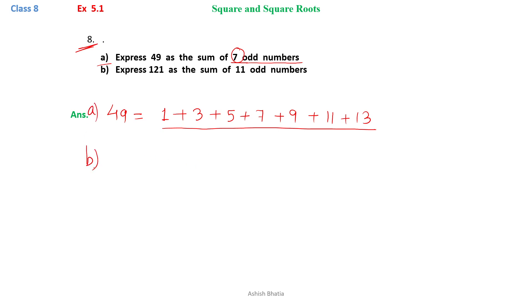Then part B, we have to represent 121 as sum of 11 odd numbers. We will represent 121 as 1 plus 3 plus 5 plus 7 plus 9 plus 11 plus 13 plus 15 plus 17 plus 19.